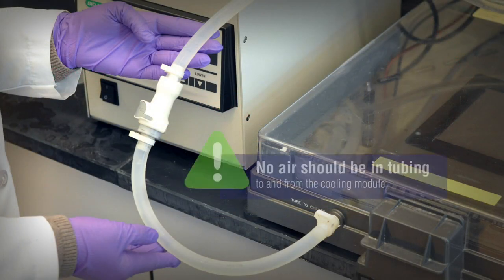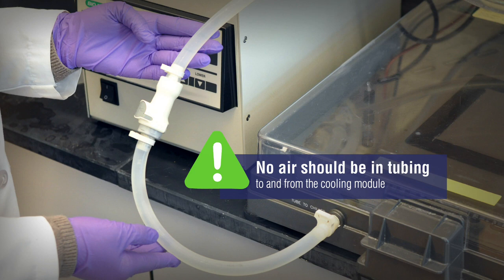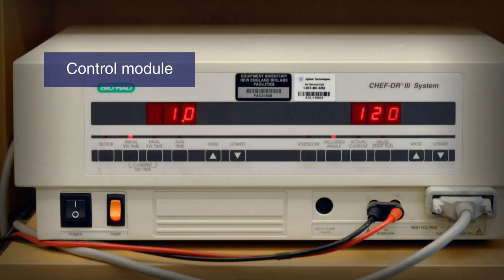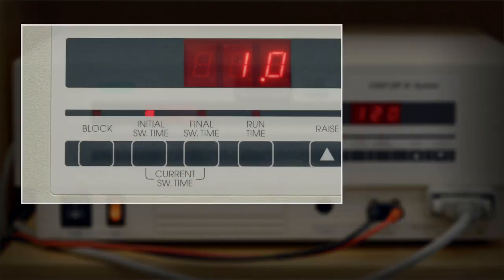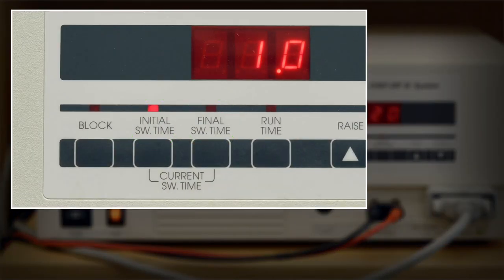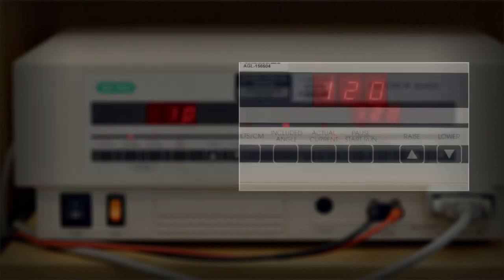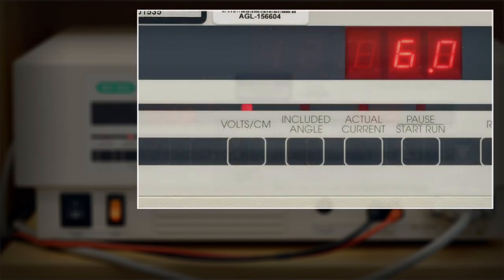It is important that no air is left in the tubing to and from the cooling module. On the control module, the migration protocol can be entered and monitored. This includes the initial and final switch times, the duration of the migration, the angle of electrophoresis, and the voltage.